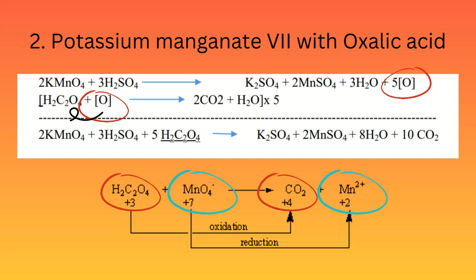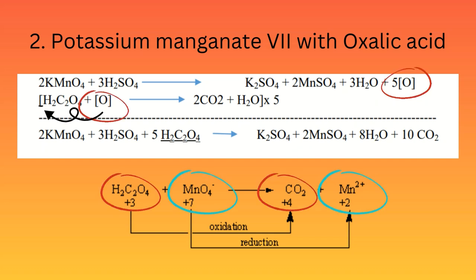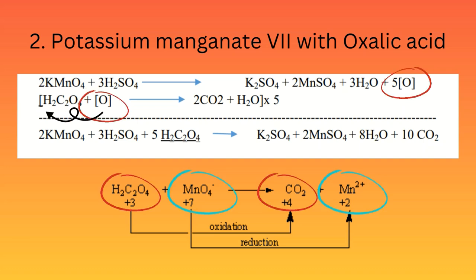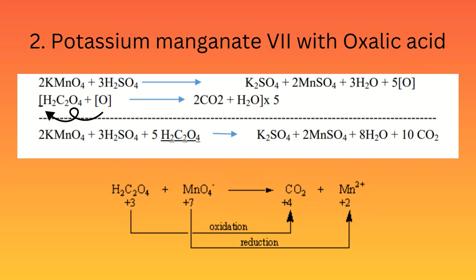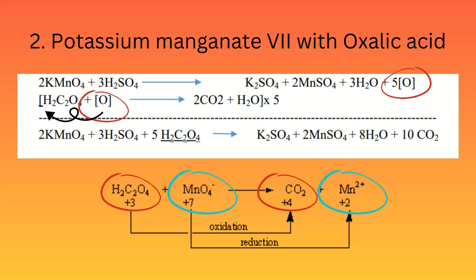Reaction 2: Reaction of potassium permanganate with oxalic acid in the presence of acid H2SO4. In this reaction, oxalic acid reacts with potassium permanganate in the presence of sulfuric acid. Nascent oxygen is produced, which reacts with oxalic acid and converts it to potassium sulfate, manganese sulfate, carbon dioxide, and water. The oxidation state of carbon increases from C3+ to C4+, meaning carbon is oxidized, whereas the oxidation state of manganese decreases from Mn7+ to Mn2+, meaning manganese is reduced.